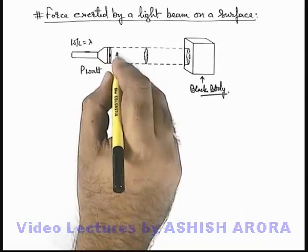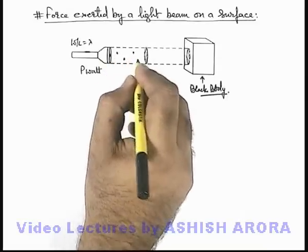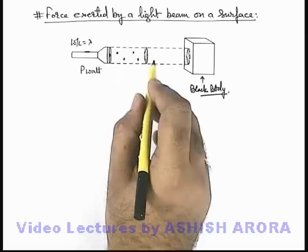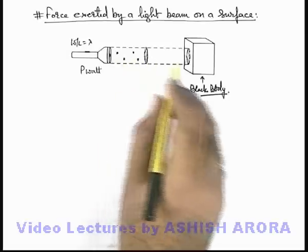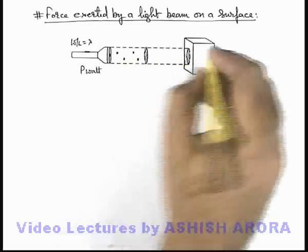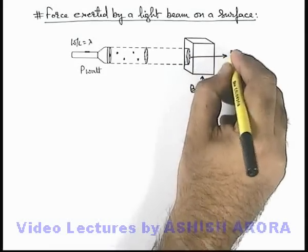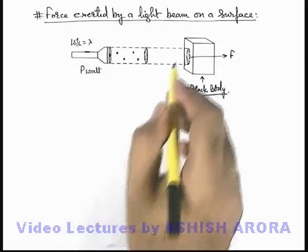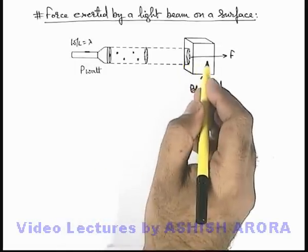As the source emits photons in the beam, and we have discussed that each photon carries some momentum, when the momentum is absorbed by a surface continuously it will exert a force on it. A force F is exerted which can be written as the total amount of momentum exerted per unit time onto it.